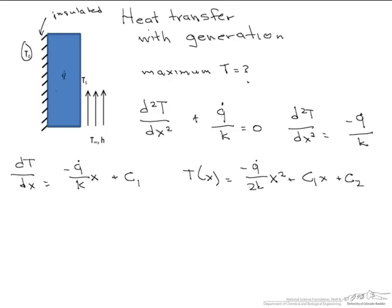We are going to need two boundary conditions to figure out our two constants. At x equals zero, dT dx equals zero because it is insulated so there is no temperature gradient. Therefore we say minus Q dot over k times x plus C1 equals zero. If x equals zero, therefore C1 has to equal zero.